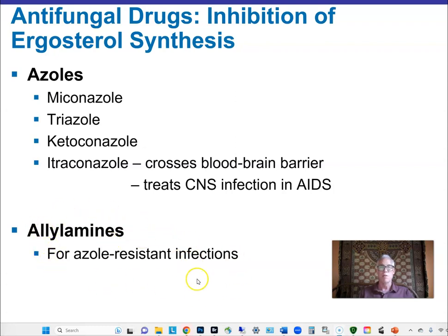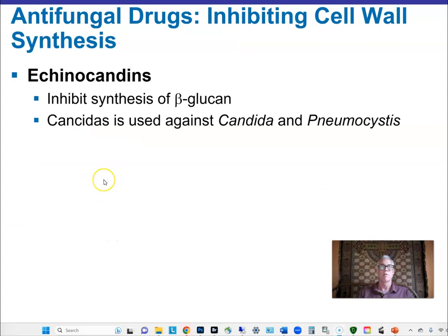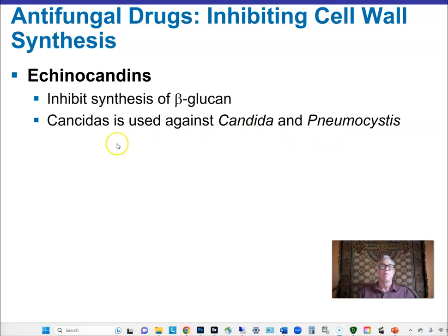Allylamines address azole-resistant fungi — another ergosterol inhibitor working by a different mechanism. Echinocandins inhibit cell wall synthesis and are important for Pneumocystis and Candida albicans — they inhibit beta-glucan, which along with chitin is a component of fungal cell walls. Flucytosine is a cytosine analog that interferes with RNA synthesis. Pentamidine isethionate is an anti-Pneumocystis drug that inhibits nucleic acid synthesis. Griseofulvin interferes with microtubule formation and is used against dermatophytes — fungi that grow on superficial skin layers, eating the keratins of keratinocytes in the outer epidermis.